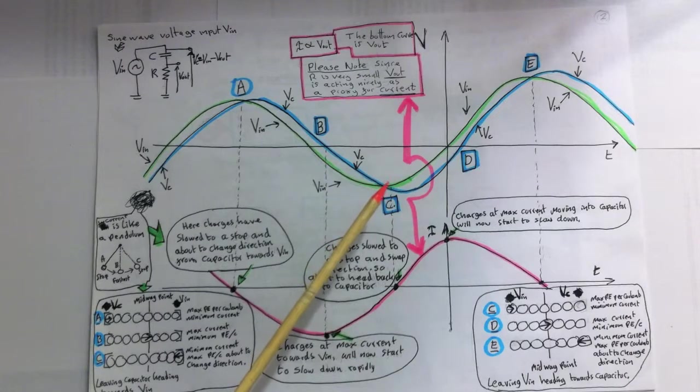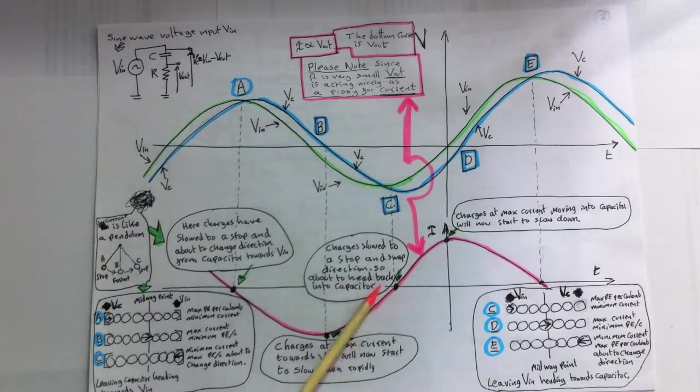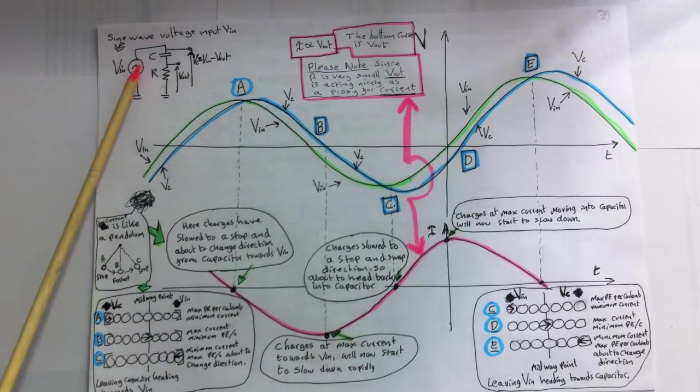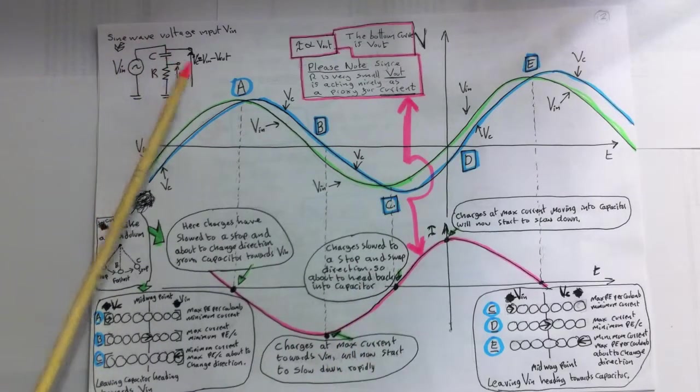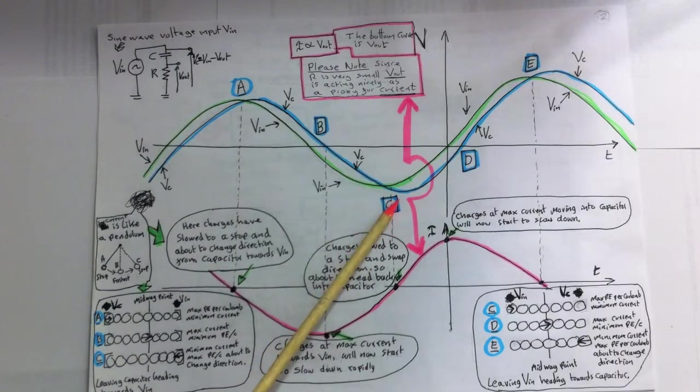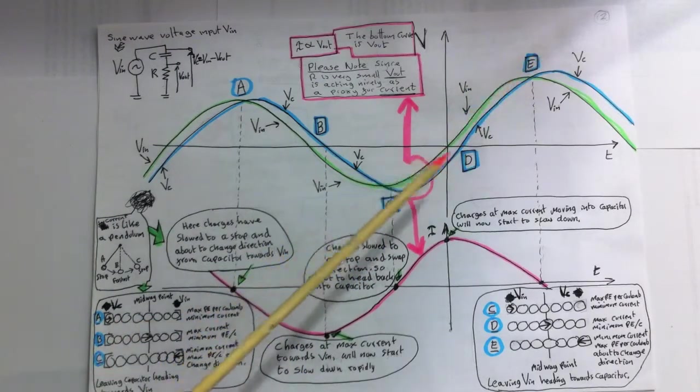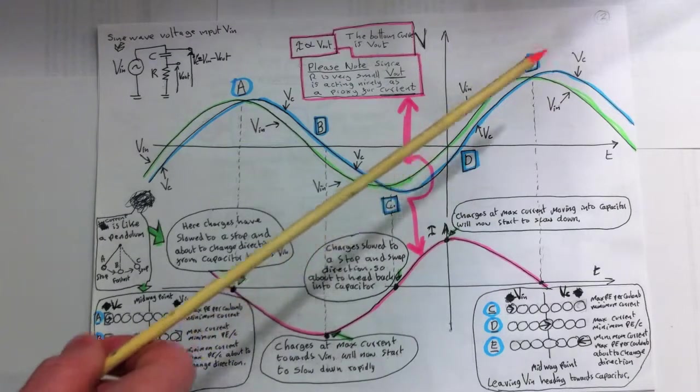Although the charges are about to start moving back into the capacitor, so this is where the changeover occurs. So now the charges will start to come back into the capacitor. From C to E now, Vin is at, we can see here, from C to E, Vin is at a higher voltage level.